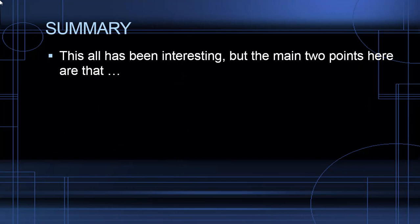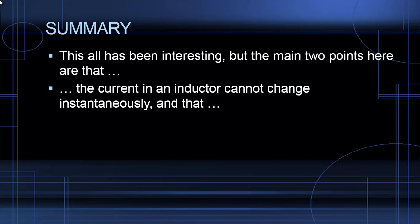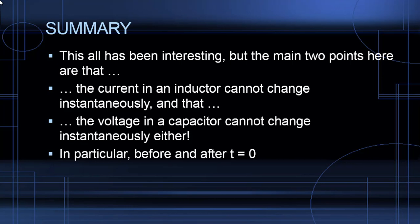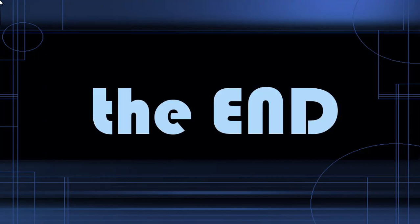Summary: the two main points from this video are that the current in an inductor cannot change instantaneously, and the voltage in a capacitor cannot change instantaneously. In particular, just before and just after T = 0 the voltage in a capacitor is the same and the current in an inductor is the same. And that has been all for this one.